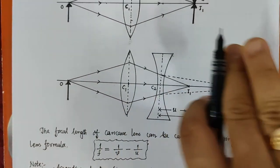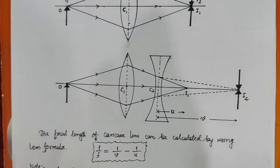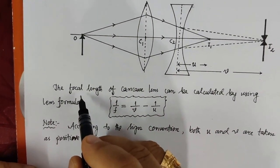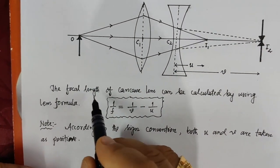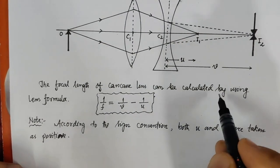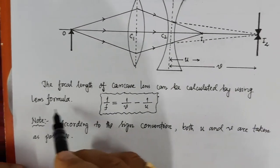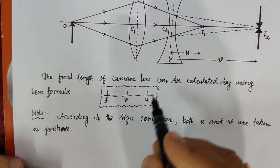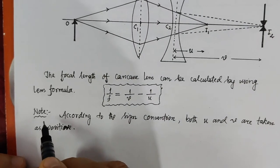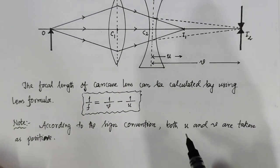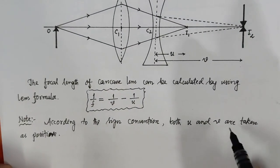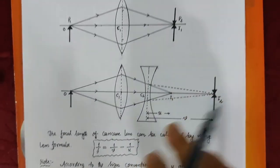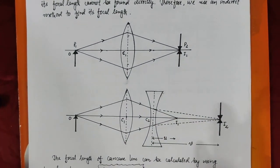U and V are now on the right side. That means by using the lens formula, the focal length of a concave lens can be calculated using the lens formula: 1/F = 1/V minus 1/U. According to the sign convention, both U and V are taken as positive since both are on the same side.